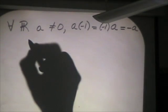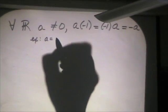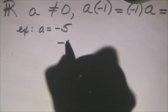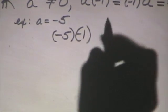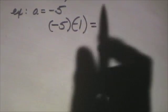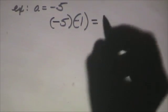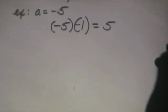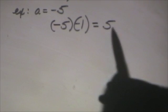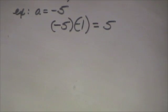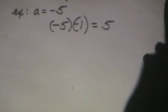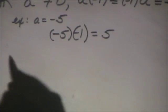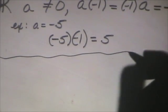Let me illustrate an example. A is equal to negative 5. If A is equal to negative 5 and I take negative 5 times negative 1, I'm going to get positive 5. Now does positive 5 look like a negative number? That's why I don't like to say negative A — it's kind of a misuse of words. So we say the opposite of A.